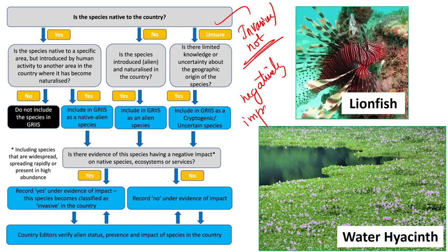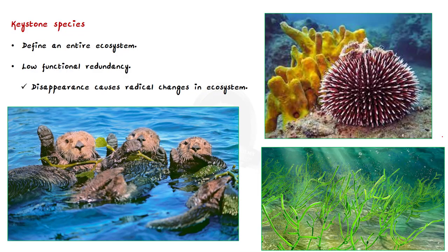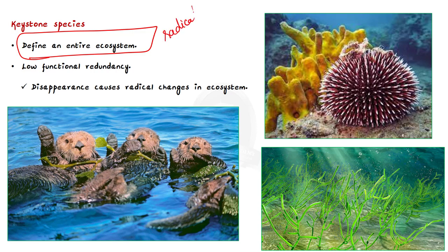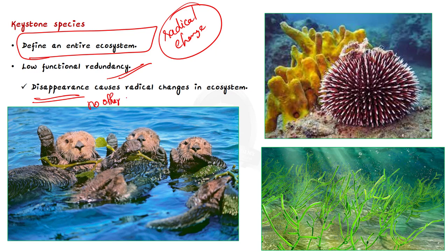Now let us learn the opposite of invasive species, which is the keystone species. A keystone species is an organism that helps define an entire ecosystem. The ecosystem would be drastically altered or cease to exist without its keystone species. Keystone species have low functional redundancy, meaning that if the species disappears from the ecosystem, no other species would be able to fill its ecological niche.